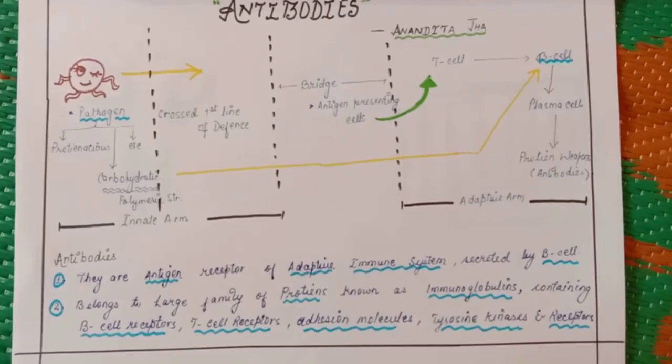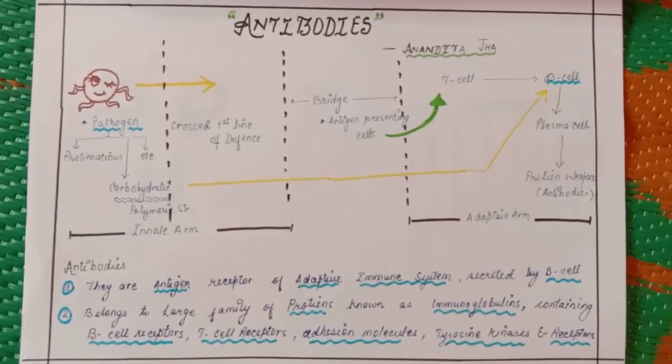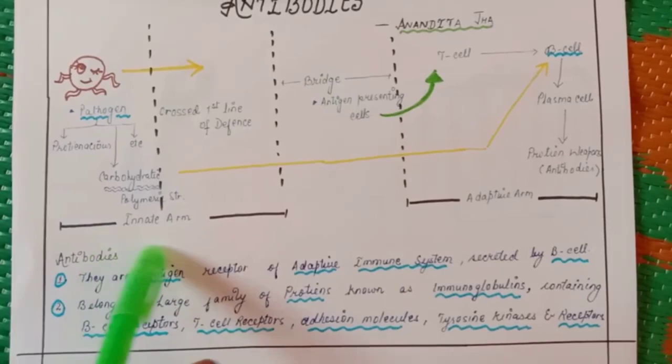What happens the very first time is it has crossed the first line of defense. This is the innate arm and this is the adaptive arm.